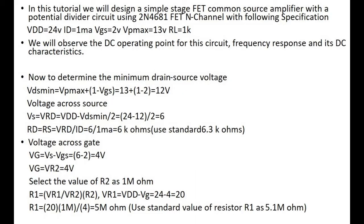To determine the minimum drain-source voltage, Vds_min equals Vb_max plus 1 minus Vgs, which is equal to 13 plus 1 minus 2, giving 12 volts. We then need to calculate the voltage across the source, as shown in this tutorial.